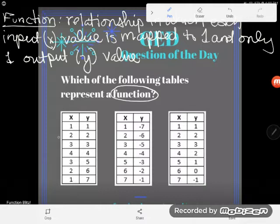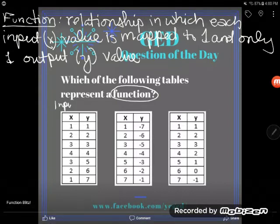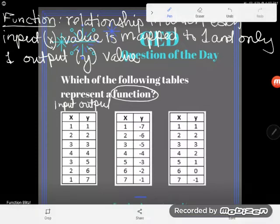Relationships are just anything mathematical where you have two variables. An XY table is an example of a relationship. This is an XY table—we see x and y on a table, and here we see our inputs and our outputs. Basically, what we want to make sure to see if it's a function is if each input value is mapped to only one output value.